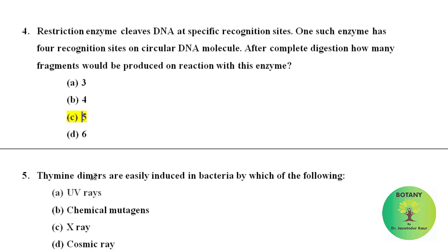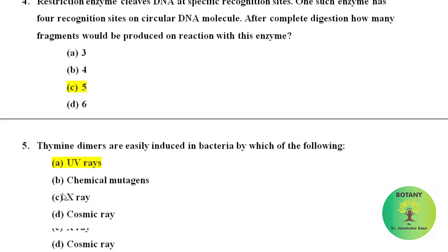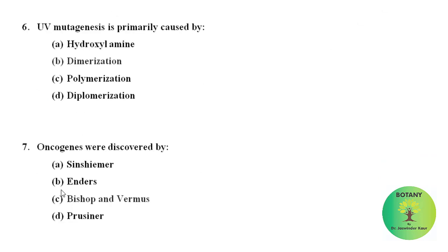Thymine dimers are easily induced in bacteria by which of the following? Thymine dimers can be easily induced in bacteria by using UV rays, that is ultraviolet rays. UV mutagenesis is primarily caused by dimerization.